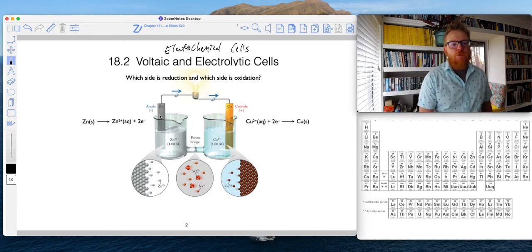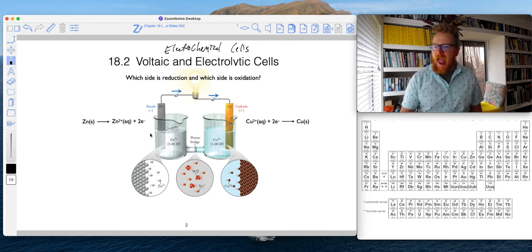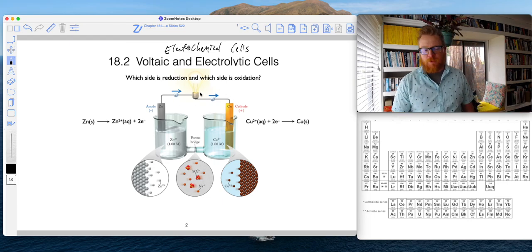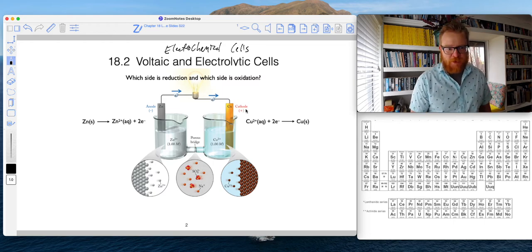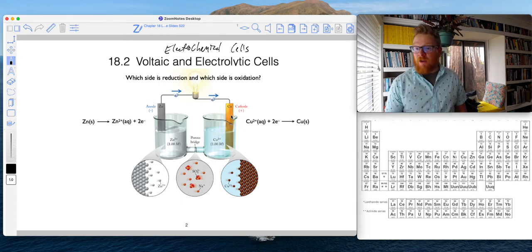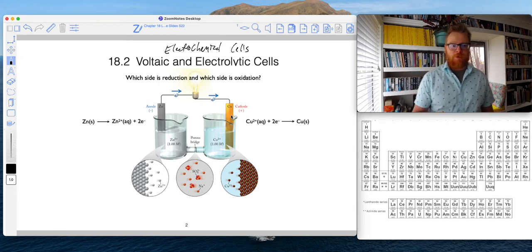For example, in my anode half—copper and zinc don't have to be the only elements I use to make an electrochemical cell—but in this particular example I have a metal zinc rod, a piece of zinc solid as indicated by the reaction. In the cathode half there is a copper rod, solid copper.